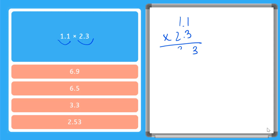So 3 times 1 is 3. 3 times 1 again is 3. I'm moving over. So I put my 0 here. 2 times 1 is 2. 2 times 1 is 2. I add my products together. 3 plus 0 is 3. 3 plus 2 is 5. And I bring my 2 down there.